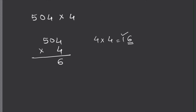Now 4 times 0 is 0, and 0 plus the carried 1 is 1. Then 4 times 5 is 20, so I write 0 here, and since there are no more digits to carry over to, I drop the 2 here. We get 2016 when we multiply 504 by 4. I hope that helped — thanks so much for watching! Please like this video and subscribe to my channel. Thank you!